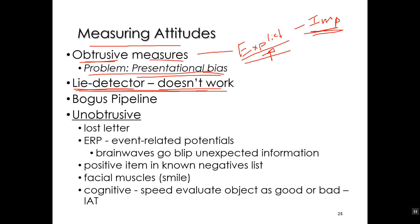However, he says, if you sign this document saying you did steal the camera, your boss will let you resign and won't file police charges. The polygraph operator does that to everybody — says the same thing regardless of the results, because of course it doesn't show anything. If you're innocent, you freak out, and the operator thinks: this person is innocent. The one person who says okay and signs it — well, that's who stole the camera. That's how polygraph operators make their money.